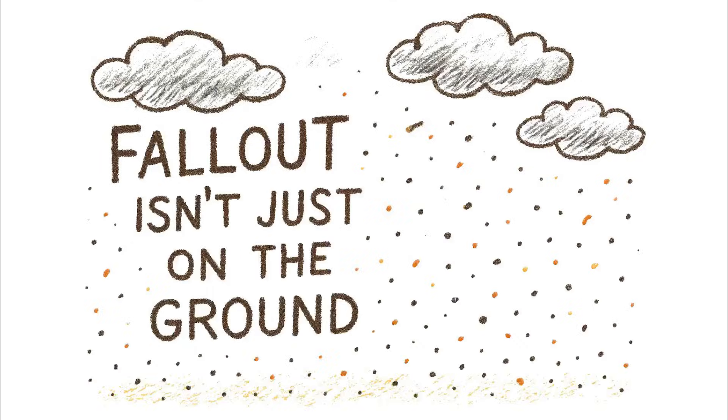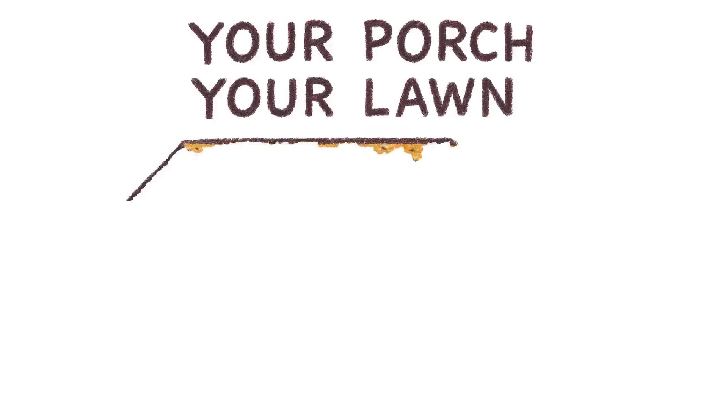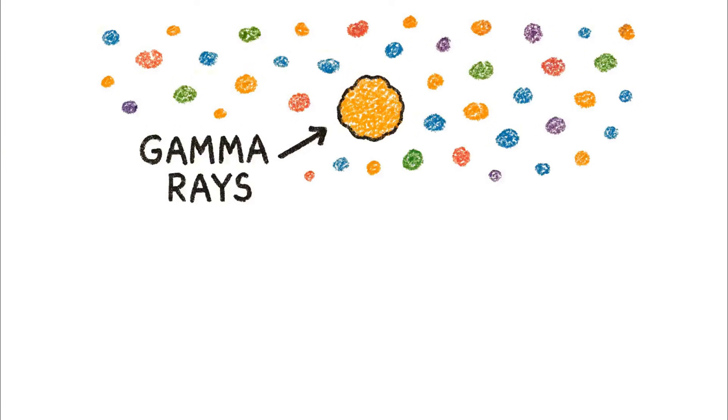Fallout isn't just on the ground. It's a fine, gritty dust that blankets every horizontal surface. Your roof, your porch, your lawn. Each of those microscopic particles is now a tiny gamma ray emitter.